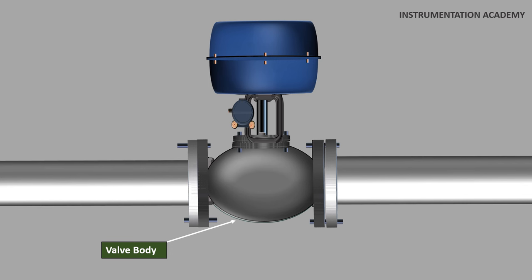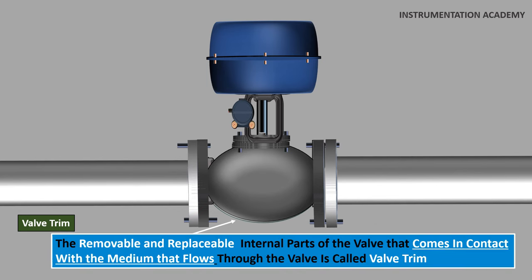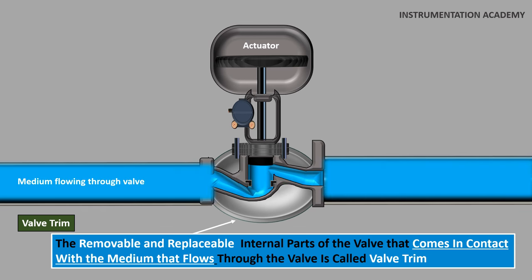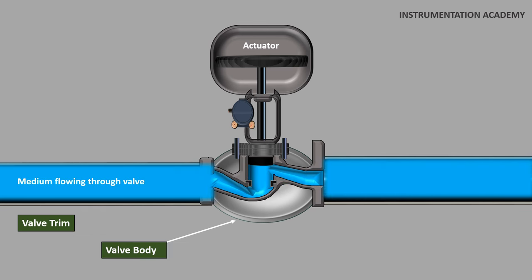Valve trim. The heart of the control valve is the trim. The removable and replaceable internal parts of the valve that comes in contact with the medium that flows through the valve are collectively termed as valve trim. Valve trim includes valve seat, valve disc, internal springs etc.